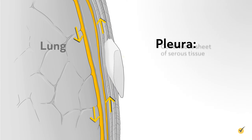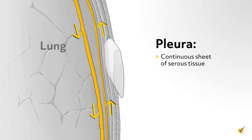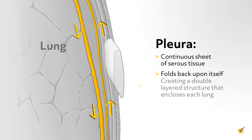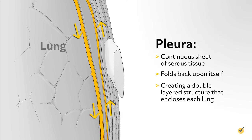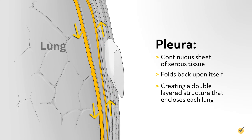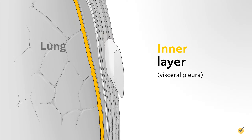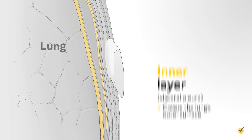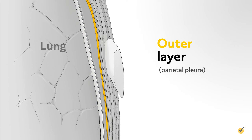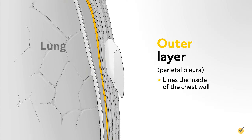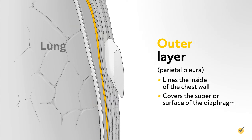Each pleura is a continuous sheet of serous tissue, which folds back upon itself, creating a double-layered structure that encloses each lung. The inner layer, the visceral pleura, covers the lung's outer surface. The outer layer, the parietal pleura, lines the inside of the chest wall and covers the superior surface of the diaphragm.